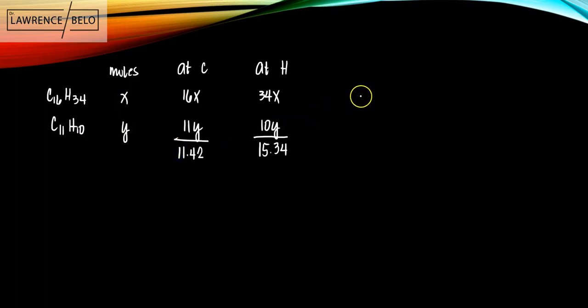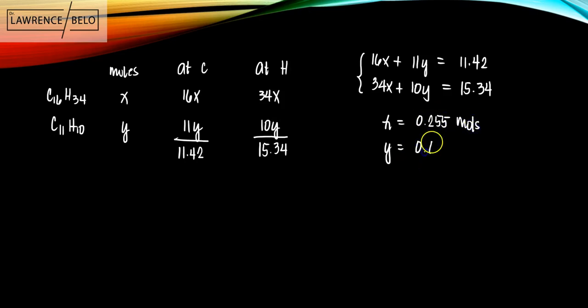So meaning in here, we can actually solve for the moles of cetane and the moles of methyl naphthalene. So in order to do that, solving simultaneously two equations, so that's 16X plus 11Y is equal to 11.42. And the other one would be 34X plus 10Y is equal to 15.34. So with these two equations, we can solve for X and Y, X being 0.255 moles, Y being 0.667 moles.